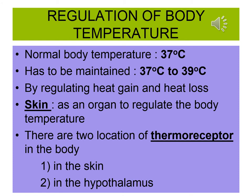For this slide I will explain about the regulation of body temperature. For humans, normal body temperature is 37 degrees Celsius. Our body has to maintain body temperature in the range of 37 to 39 degrees Celsius. More than 39 degrees Celsius will harm our body because it will denature our enzymes.